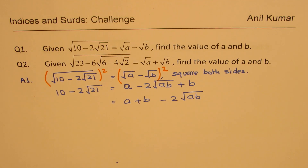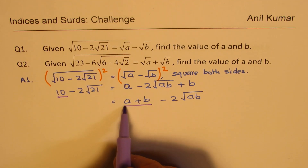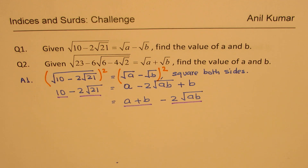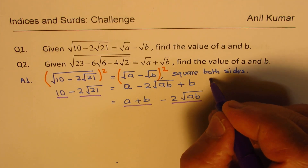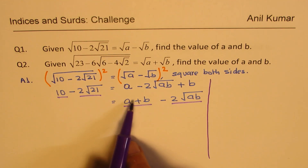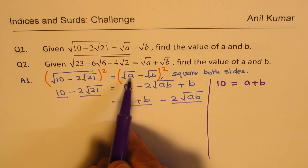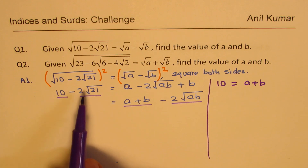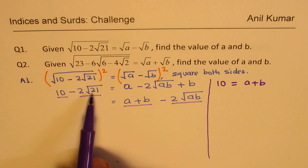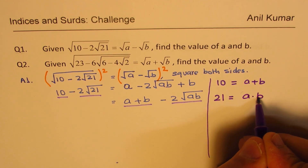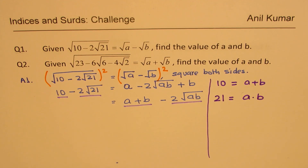You will notice that the constant term 10 can be equated to A plus B, and the term 2 square root of 21 can be equated to 2 square root of AB. Comparing, we notice that 10 is equal to A plus B, and inside, 21 is the product of A and B. So the idea is to find two numbers whose sum is 10 and whose product is 21.